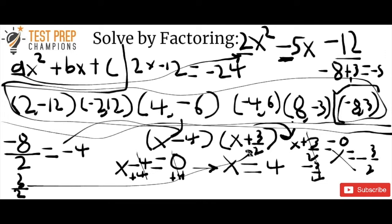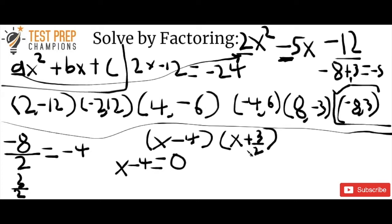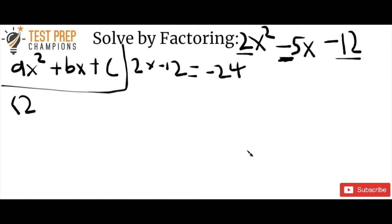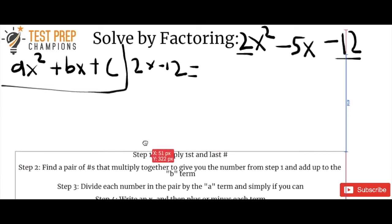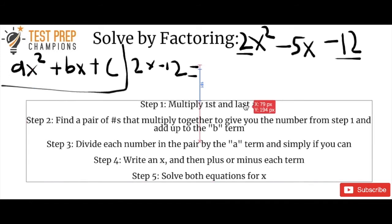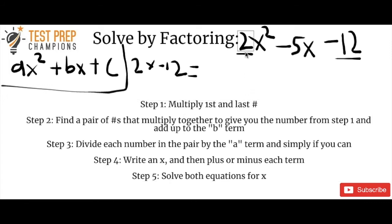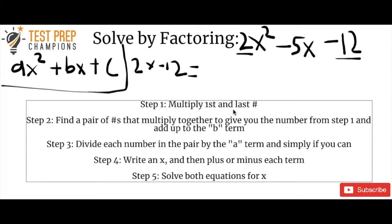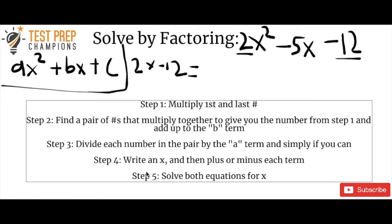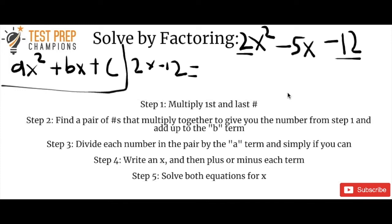That's really how you do it. Let me put my notes up here so you can add them to your notes. Step 1: multiply the first and last numbers together. Step 2: find a pair that multiplies to that number and adds to your b term. Step 3: divide each number in the pair by the a term and simplify. Step 4: write x plus or minus each term. Step 5: set both equal to zero and solve for x.